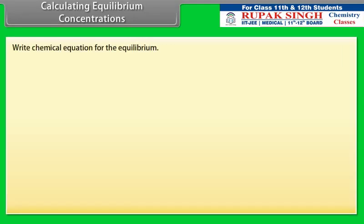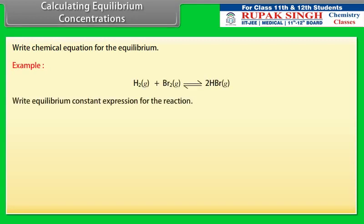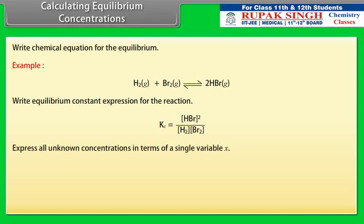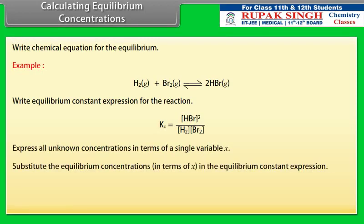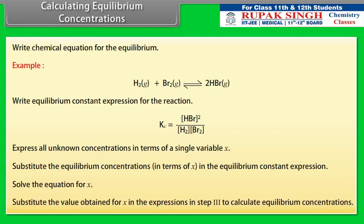Calculating equilibrium concentrations: Step 1 — write the chemical equation for the equilibrium. Step 2 — write the equilibrium constant expression for the reaction. Step 3 — express all unknown concentrations in terms of a single variable X. Step 4 — substitute equilibrium concentrations in terms of X into the equilibrium constant expression. Step 5 — solve the equation for X. Step 6 — substitute the value of X back into the expressions from step 3 to calculate equilibrium concentrations.